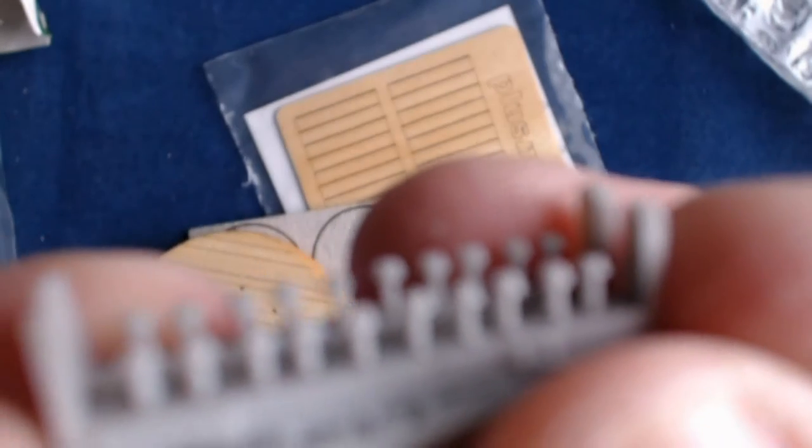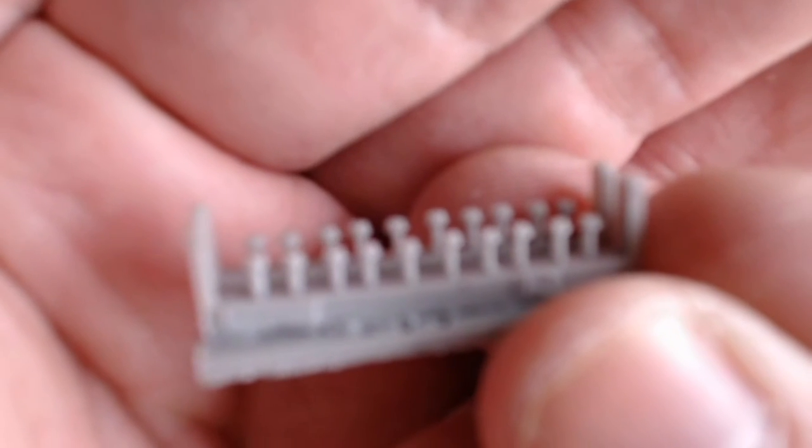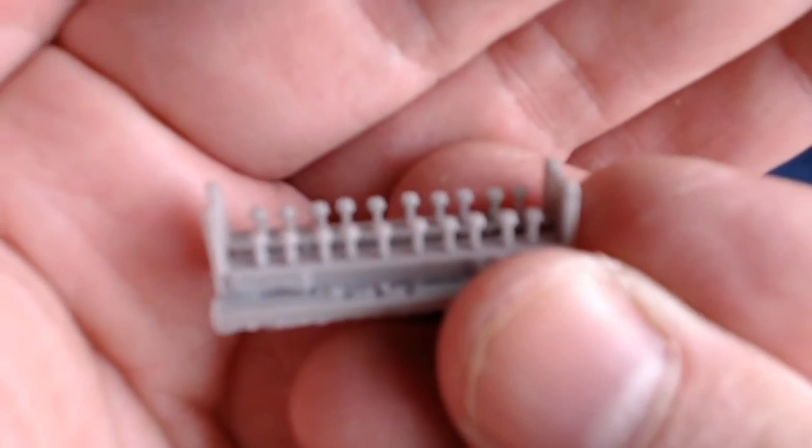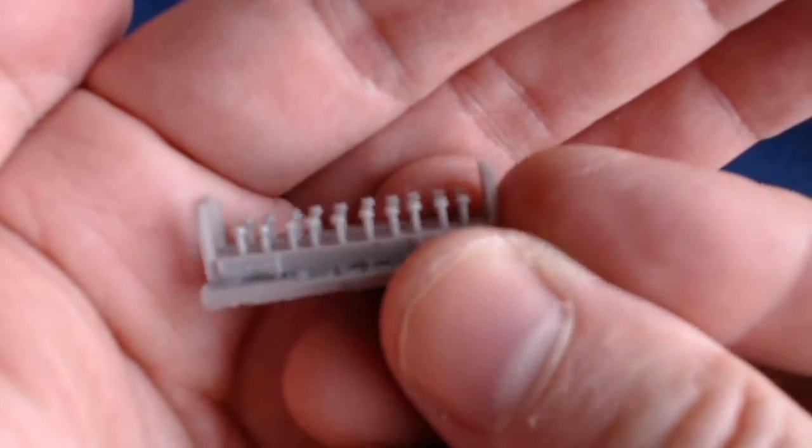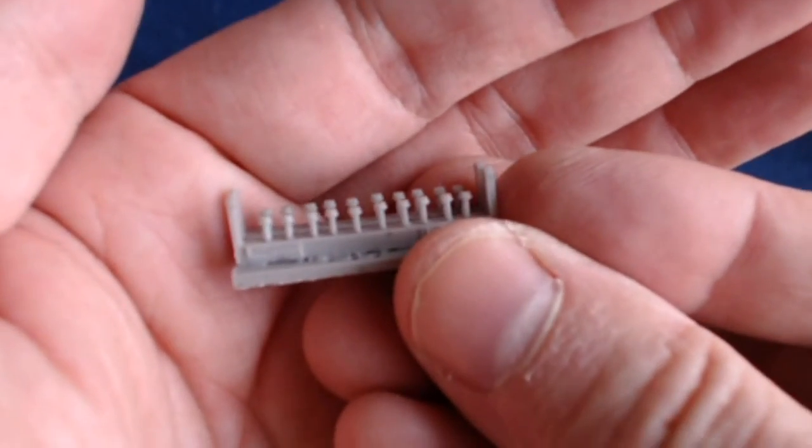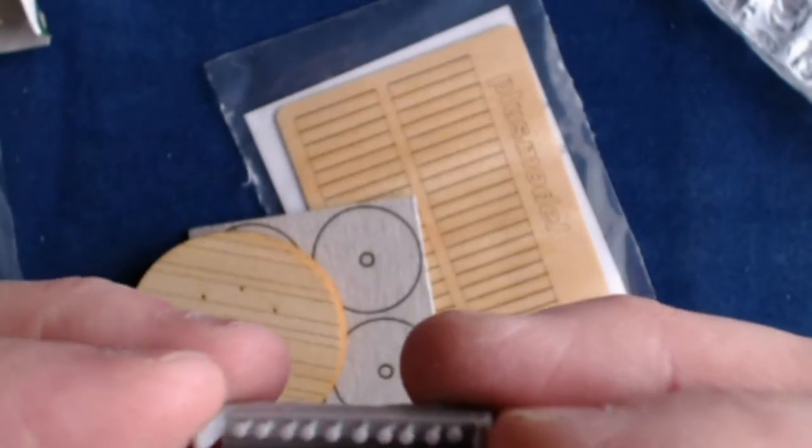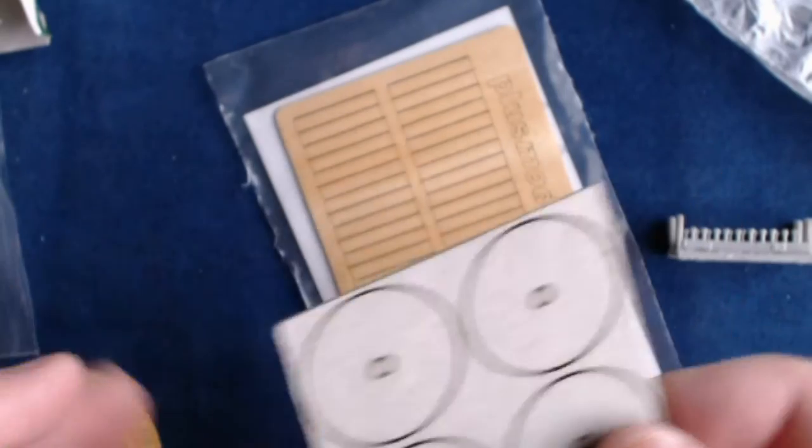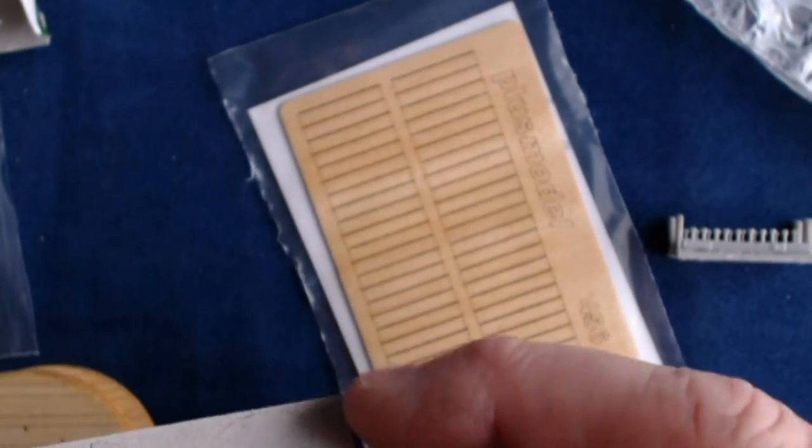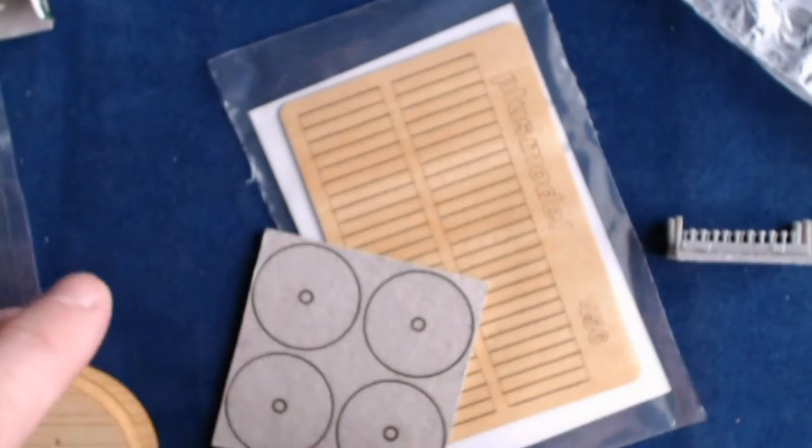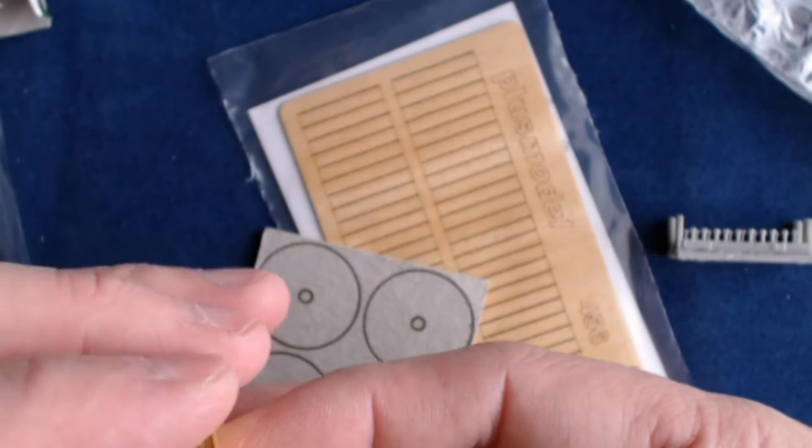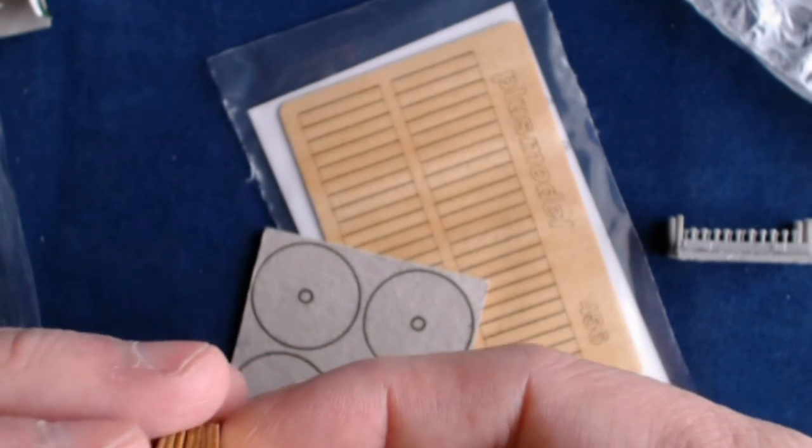So here's the bolts. And again, let me try to get my camera to cooperate here and focus, focus camera, focus power. Anyways, there'll be some photos at the end, but they are nicely detailed little resin bolts there. So these pieces go on to here. Those pieces form the center hub. And then these are the reels on each side to hold the wire.